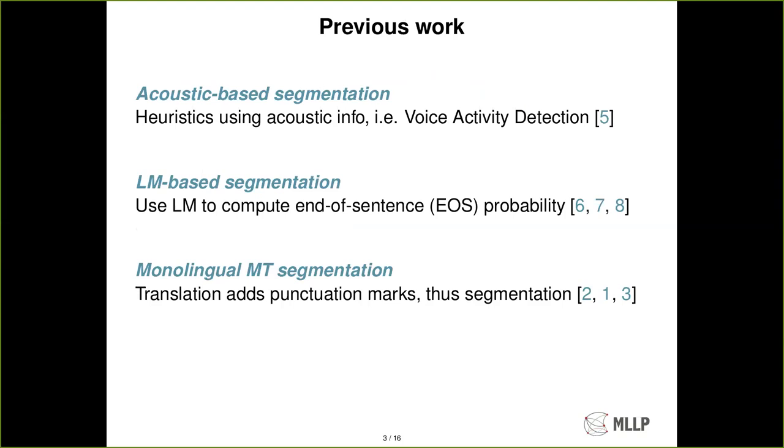In terms of previous work, some people have tried to carry out segmentation based on acoustic heuristics, for example, looking at the position of silence phonemes in order to split. Other people have also tried to use language models. They compute the probability of an end-of-sentence token and then decide depending on that. And also monolingual machine translation has been used. They take as input the ASR transcription and produce a translation which includes punctuation marks and you can then segment based on that. So if you find an exclamation mark, a question mark or a period you consider that you have a split decision.